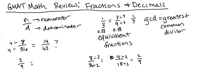Now for 14 over 63, the greatest common divisor is seven. Dividing by seven: seven goes into 14 two times and into 63 nine times, giving us two ninths. So two ninths equals two ninths, and therefore these two fractions are equivalent.